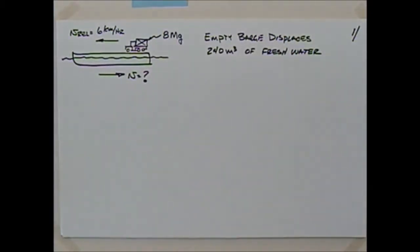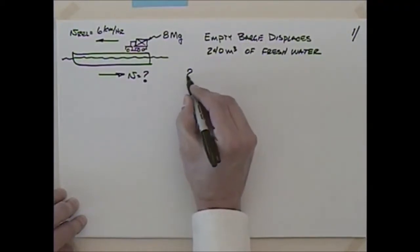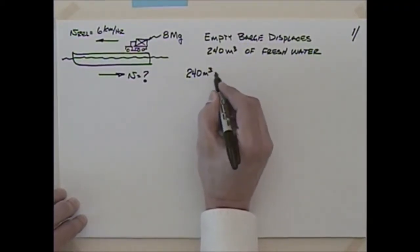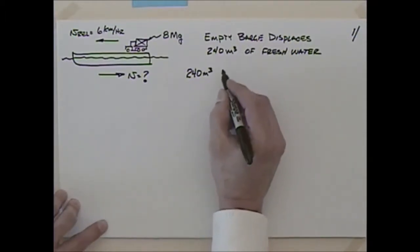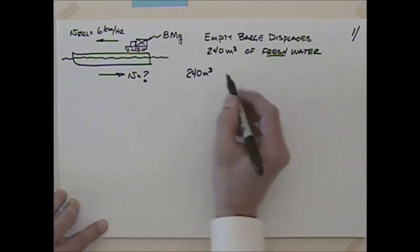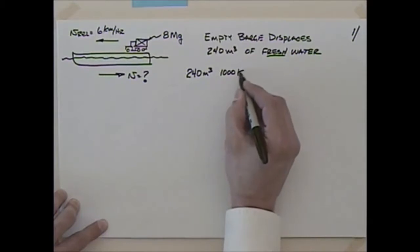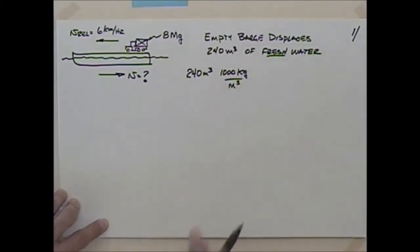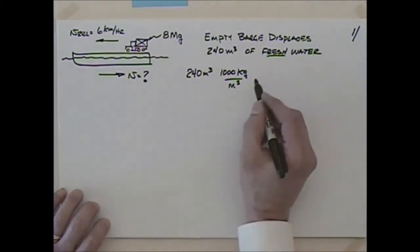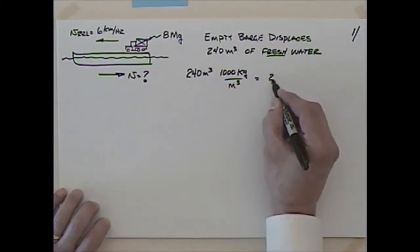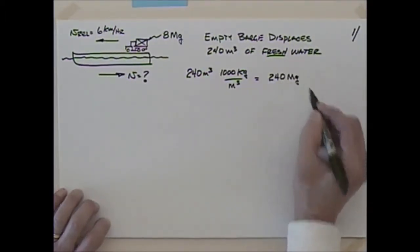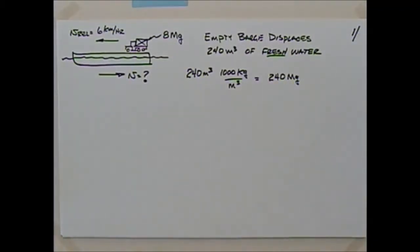The weight of the barge equals the weight of the water it displaces. We have 240 cubic meters of displacement, and the density of fresh water is 1,000 kilograms per cubic meter, so this turns out to be 240 megagrams. If it were salt water, it would displace less because the density of salt water is greater.